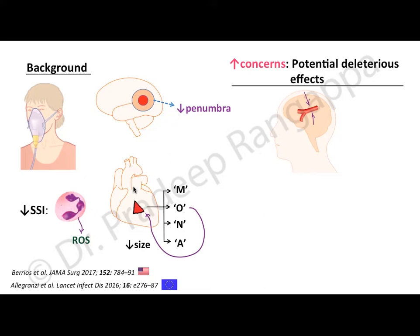Supplemental oxygen can cause cerebral vasoconstriction and that may lead to deleterious effects. Giving oxygen can also lead to worsening of fibrosis and may delay extubation. Oxygenation causes vasoconstriction in the coronaries as well, which may lead to coronary hypoperfusion and bad outcomes. These are some of the deleterious effects of giving oxygen unnecessarily.